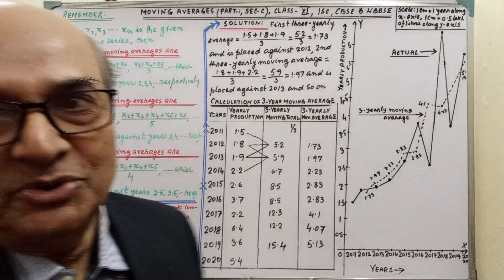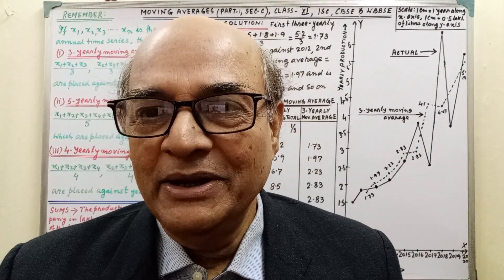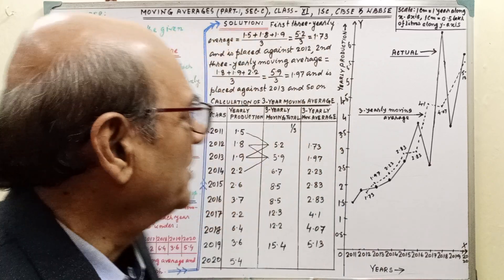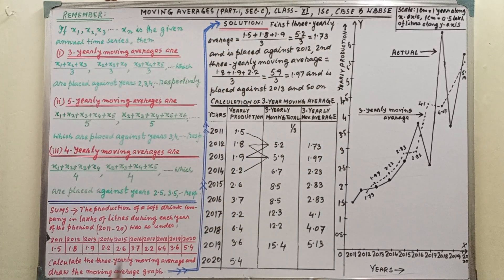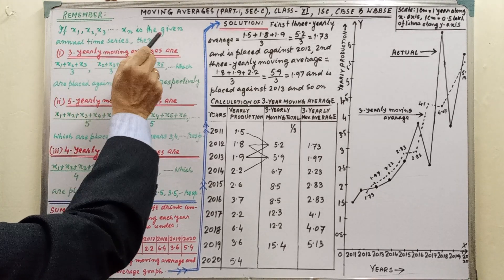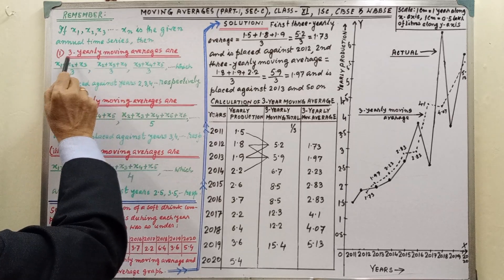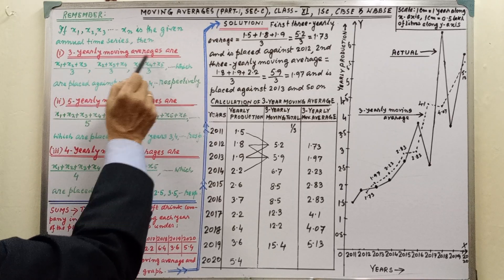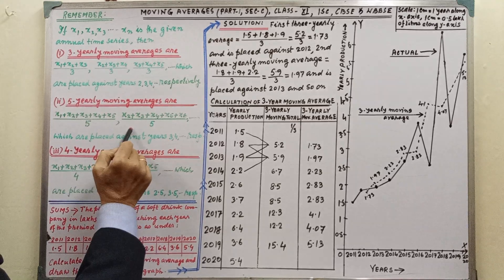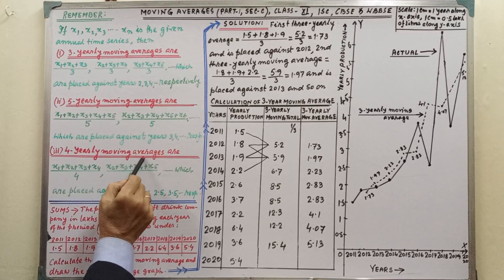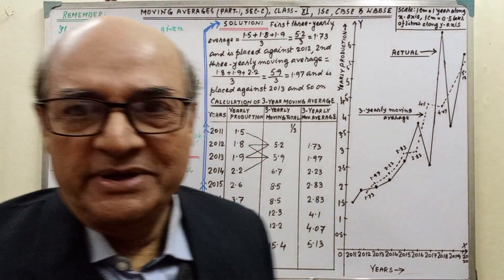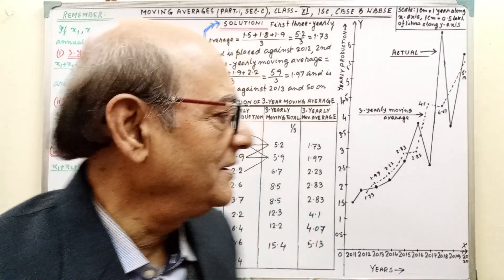Now, please pay your attention on the board. You must listen very attentively because if you understand one sum, then any sum you can do yourself. First we have to remember these three parts. If x1, x2, x3, etc. is the given annual time series, then 3 yearly moving averages is given this way, 5 yearly moving averages are given this way, and 4 yearly moving averages are this. If you see the solution, then it will be more clear.